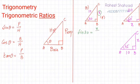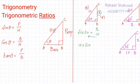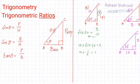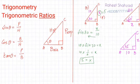So we write: sine of 30 = x divided by 10. Cross-multiplying gives x = 10 × sin 30. Using a calculator, sin 30 = 1/2, so x = 5. That means this length is equal to 5.